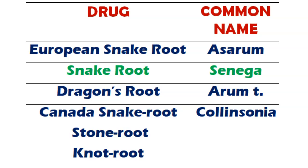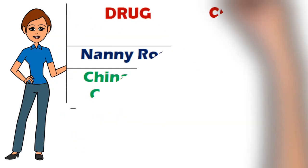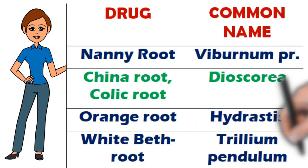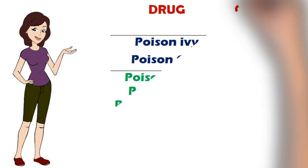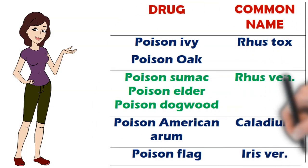Canada snake root, stone root, and knot root are the common names of Collinsonia. Nani root is the common name of Viburnum prunifolium. China root and colic root are the common names of Dioscorea. Orange root indicates Hydrastis, and white beth root is Trillium pendulum.